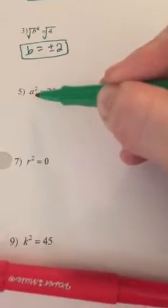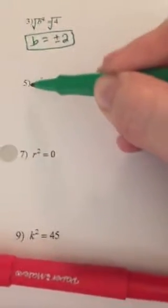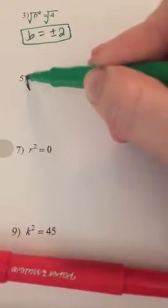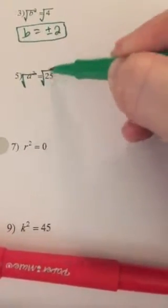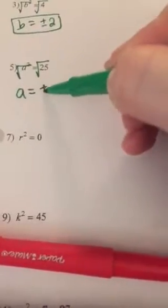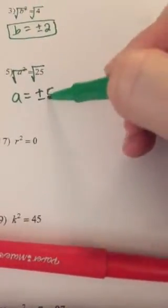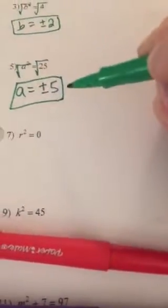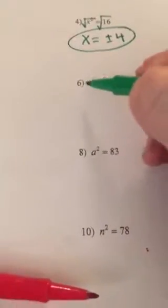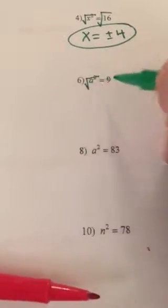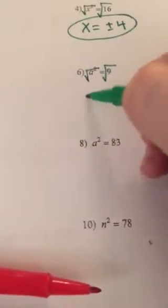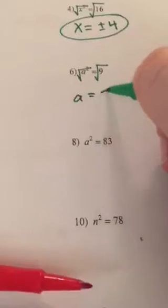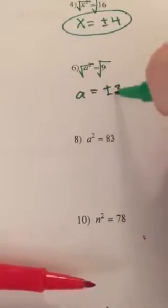Nothing being added, square root both sides: a equals plus or minus 5. Same thing — a squared is by itself, square root: a equals plus or minus 3.